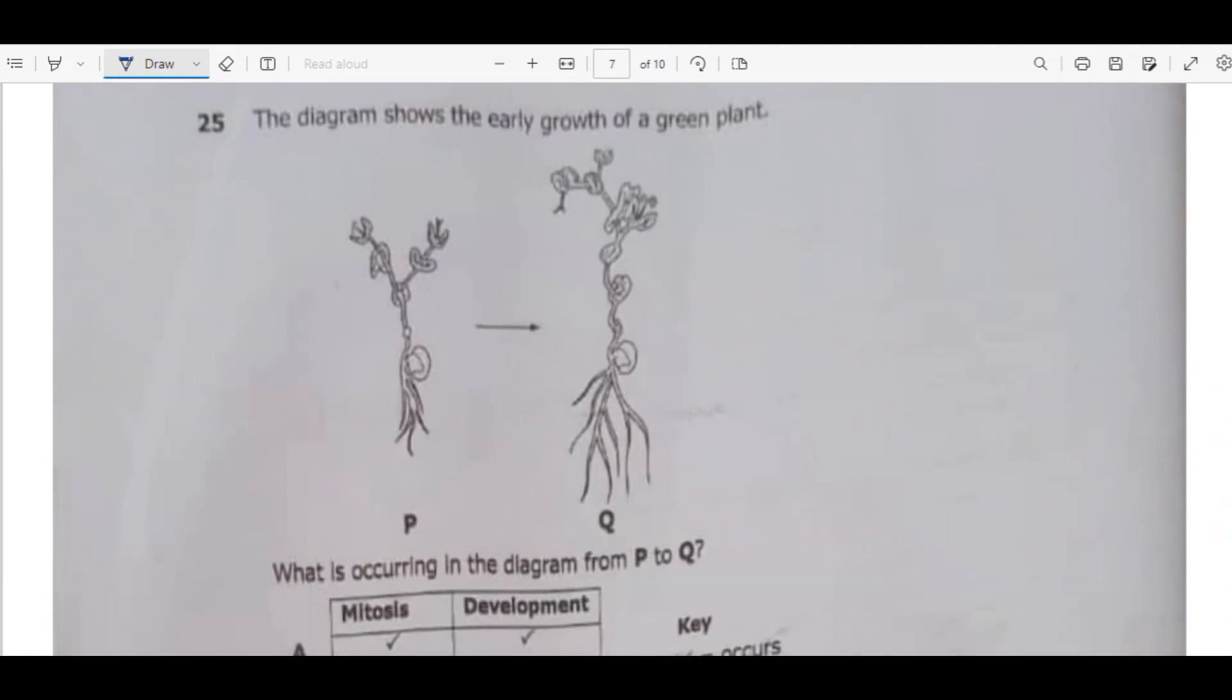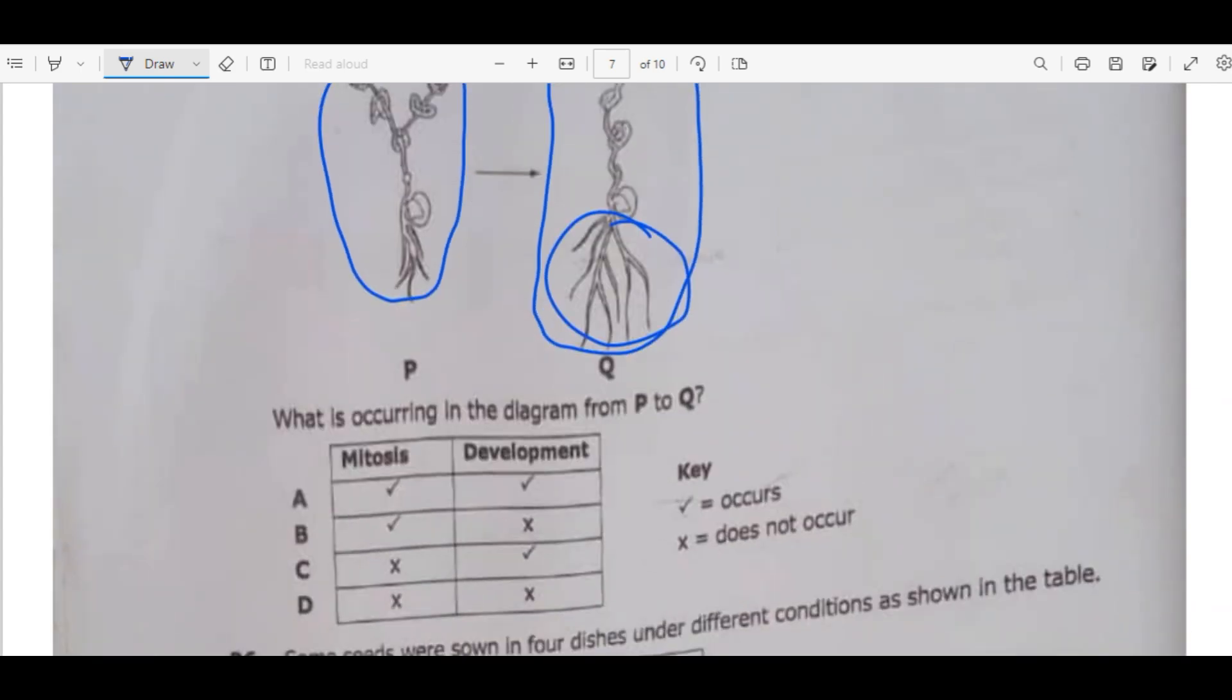We have question 25. The diagram shows the early growth of a green plant. We can see here we have a small plant here. At least it has grown. You can even see the roots here, even the shoot system, the early growth. What is occurring in the diagram from P to Q? Whenever there is a mark it means whatever process they are looking for occurs, then X does not occur.